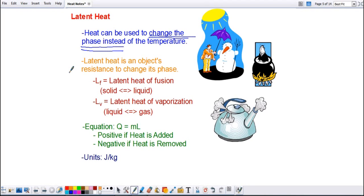Some objects are going to want to stay a solid more than others. It will take more heat, more energy to change their phase. So this is dependent upon the substance. Now, there are two types here.